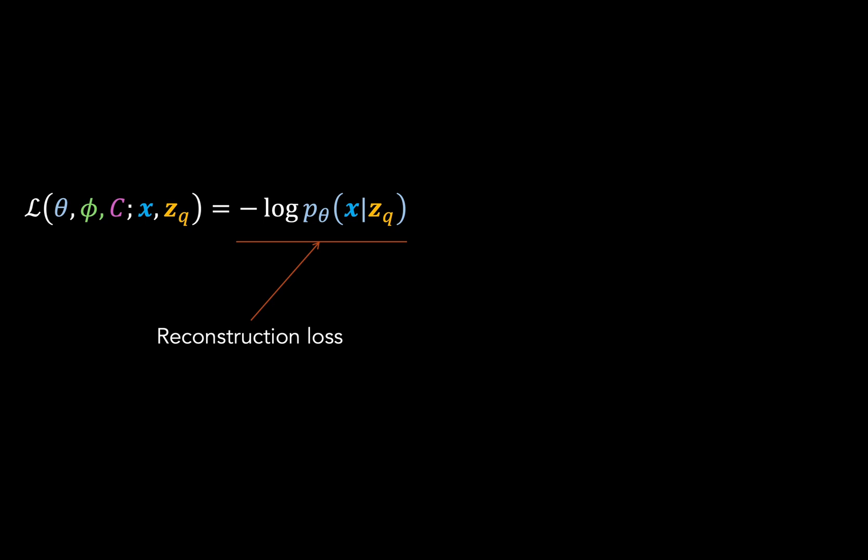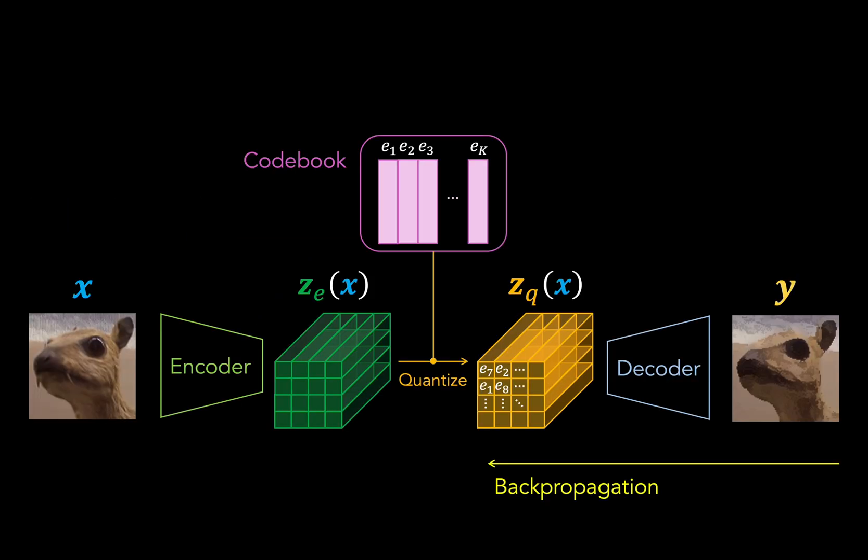The encoder, parametrized by phi, the decoder, parametrized by theta, and the codebook, which we denote as big C. Now realize that there is no longer an expectation over the posterior, because now the posterior is deterministic. Now the way we would transmit gradients through a neural network is typically through backpropagation, and we could do that just fine for the decoder. But we hit a problem at this quantization step here, and that's because the quantization operation is not differentiable. Therefore, we cannot transmit gradients to the encoder and codebook via backpropagation.